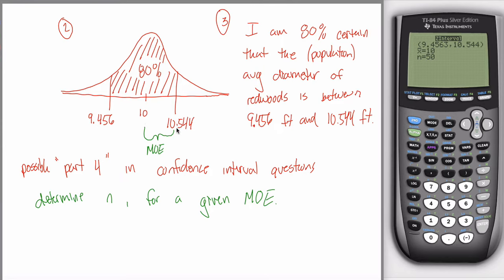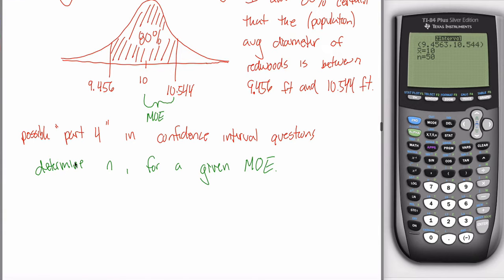There are two different ways you can decrease the margin of error. One way is you could reduce your level of confidence — if you decrease your confidence level, you're also decreasing your margin of error. But that's not the solution we want. You could say, 'I'm 30% sure it's between 9.8 and 10.2,' but that doesn't help. We want the margin of error to decrease while keeping the confidence level the same.